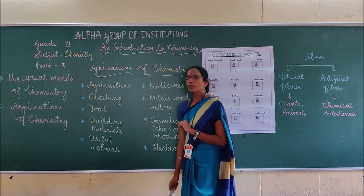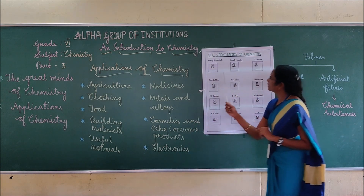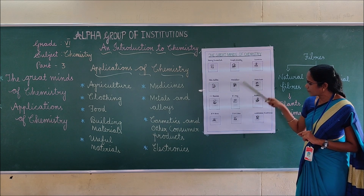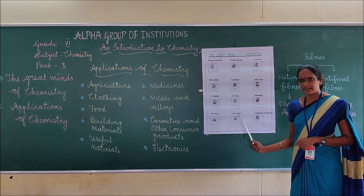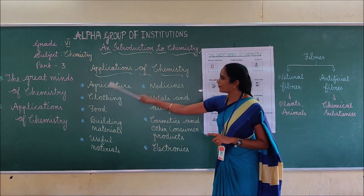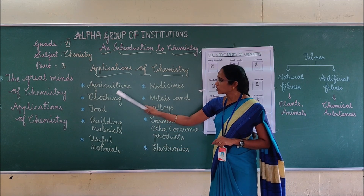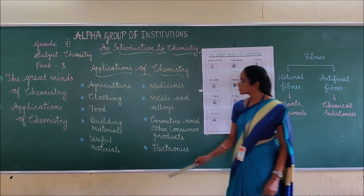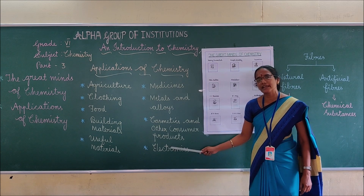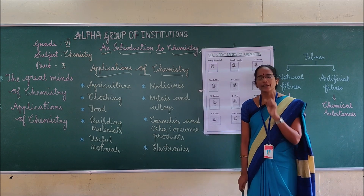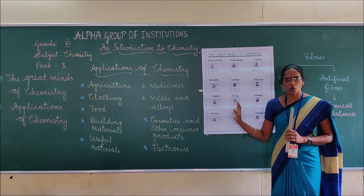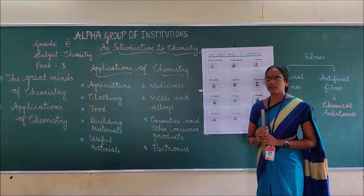Now I will give you the home assignment, children. We discussed about the great minds of chemistry — nearly 12 scientists and their inventions and discoveries. You have to go through everything and also read about the applications of chemistry in various fields: agriculture, clothing, food, building materials, useful materials, medicines, metals and alloys, cosmetics and other consumer products, and finally electronics. Your writing work is to write the great minds of chemistry one time in your draft book. Try to complete your assignment, children. Thank you.